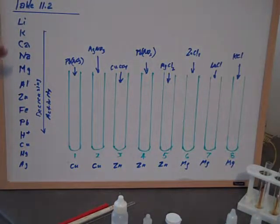What we did here was write out the activity series of the metals. You can see on the extreme left side, all the way from lithium, the most active metal that's listed in table 11-2 in your textbook, down to silver, which is the least active metal listed there.